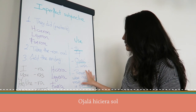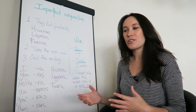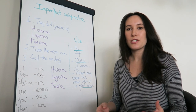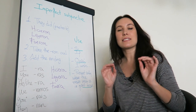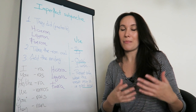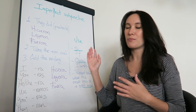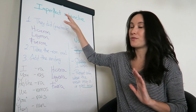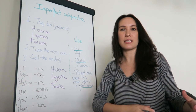Then we have other cases which are the cases for present subjunctive — so when I need to use present subjunctive, but the sentence is in past tense, the main verb is in past tense, I would use imperfect subjunctive. It makes sense: I go for imperfect, the past tense, instead of present tense.